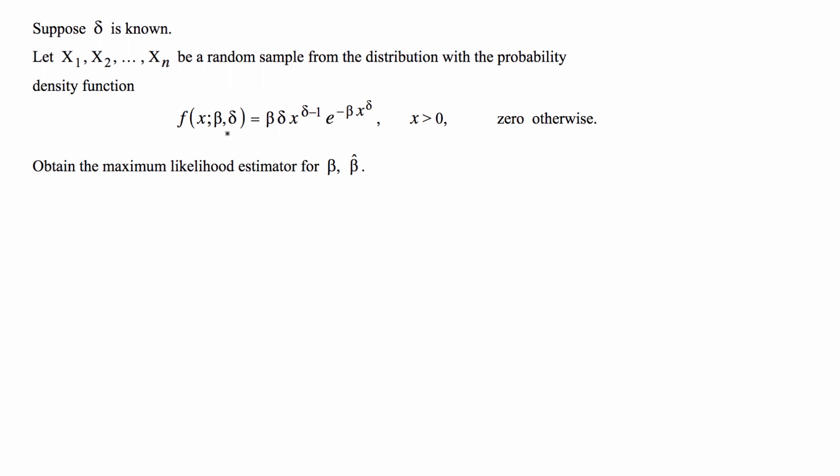The steps for these types of problems are pretty much always the same. Basically we're given the PDF and what we're going to do is take the product of the PDF. The pi is the symbol for just multiplying the function by itself multiple times, and then to make the calculation simpler we're going to take the natural log of that likelihood function and that makes it easier if we're calculating it by hand like we are in this problem.